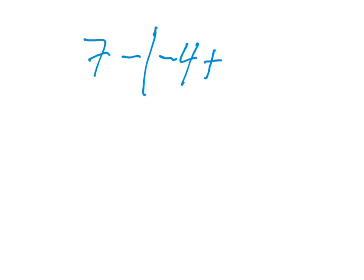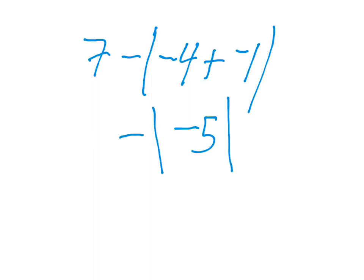Here's another example: 7 minus the absolute value of negative 4 plus negative 1. It's okay if you don't know what negative 4 plus negative 1 is — that equals negative 5. But we haven't removed the absolute value bars yet, so we keep them. Now we have 7 minus the absolute value of negative 5. The absolute value of negative 5 is 5, which removes the bars. Then 7 minus 5 equals 2.